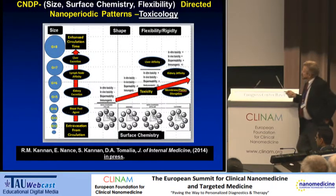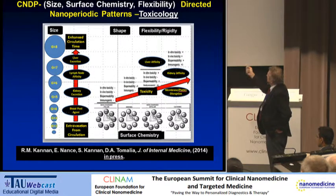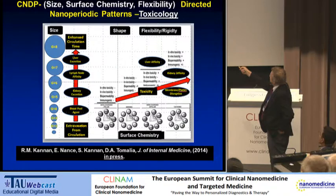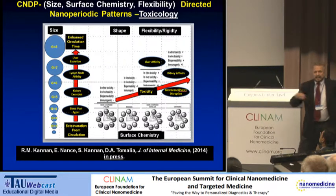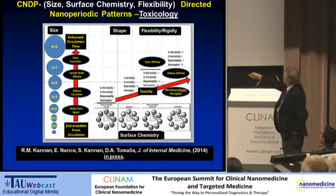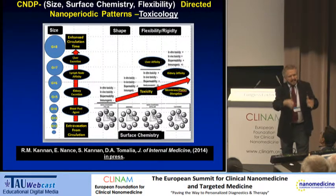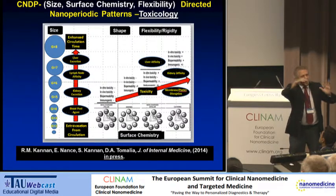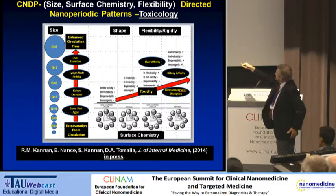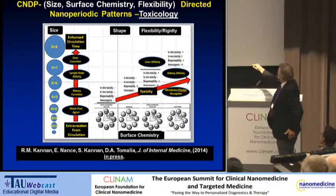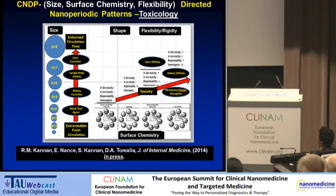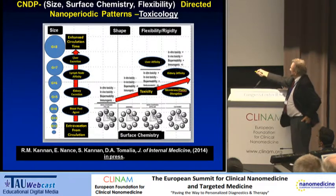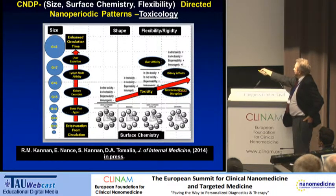Furthermore, we were able to remediate and improve toxicology properties by using CNDP engineering on size, surface chemistry, and flexibility, very dramatically changing and enhancing our features for nanotoxicology. By CNDP engineering, one develops beautiful nanoperiodic patterns as a function of size, surface chemistry, or shape and flexibility. These issues are discussed in detail in the about-to-be-released Journal of Internal Medicine review.